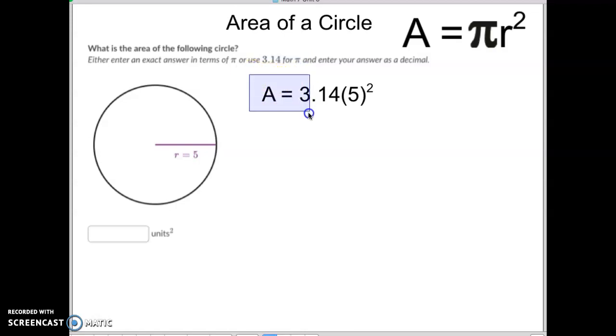The area equals 3.14 times the radius squared. Now, in order of operations, we must square this number first. 5 squared is the same as 5 times 5, which is 25. Then we take pi times 25 and we get 78.5. That's our answer. It's that simple.